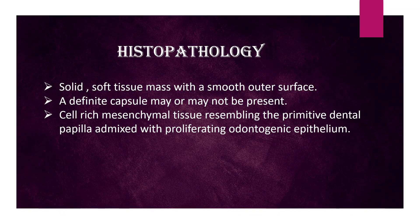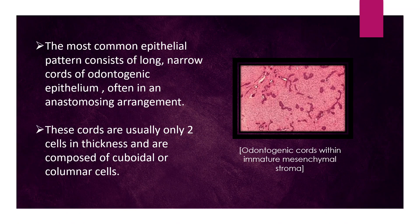Histopathological features are as follows. A solid soft tissue mass with a smooth outer surface. A definite capsule may or may not be present. Cell-rich mesenchymal tissue resembling the primitive dental papilla, admixed with proliferating odontogenic epithelium. The most common epithelial pattern consists of long narrow cords of odontogenic epithelium, often in an anastomosing arrangement. These cords are usually only two cells in thickness and are composed of cuboidal or columnar cells.